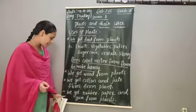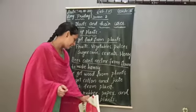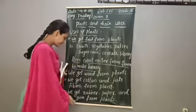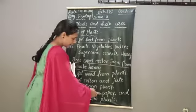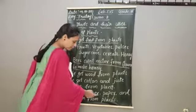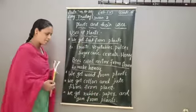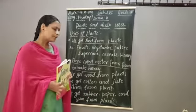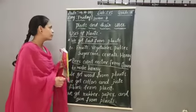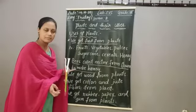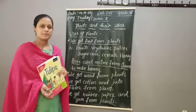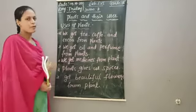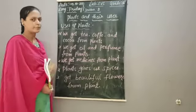Next point: we get rubber, paper, and gum from plants. These items — rubber, paper, and gum — are all obtained from plants. There are still other uses from plants.